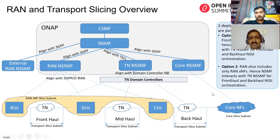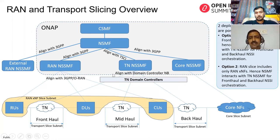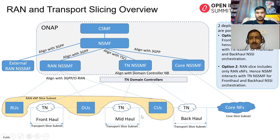In option two, the RAN NSSMF is responsible only for the RAN network functions — RU, CU, DU — while the NSMF directly interacts with the transport network NSSMF to allocate fronthaul and midhaul slices. Our implementation approach tries to support both options.